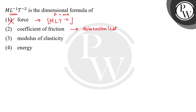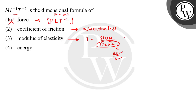Modulus of elasticity is stress upon strain. Strain is ΔL/L, so L and L cancel out — strain is dimensionless. Stress is force upon area, so its dimensions are MLT⁻² divided by L², giving ML⁻¹T⁻². Therefore the dimensions of Young's modulus are ML⁻¹T⁻².